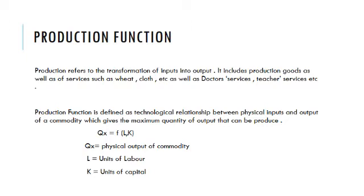Production function is defined as the technological relationship between physical inputs and output of a commodity, which gives the maximum quantity of output that can be produced. It is written as: quantity of X is a function of labour and capital — that is, production of commodity X depends upon labour and units of capital.